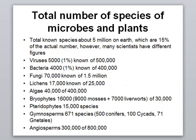Regarding the total number of species of microbes and plants on the whole earth: there are about five million species known so far, which is only 15 percent of the actual number — meaning there could be far more than five million species on this planet. For example, in the case of viruses, there are an estimated 500,000 viruses existing on earth, but we currently know only 5,000, which is just one percent.